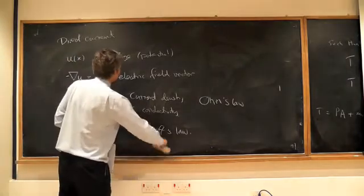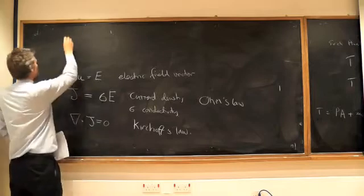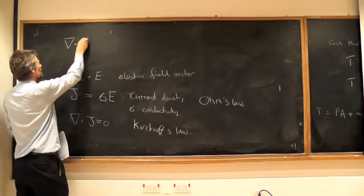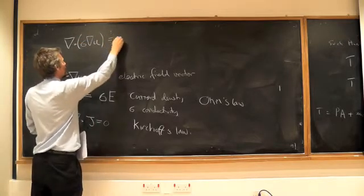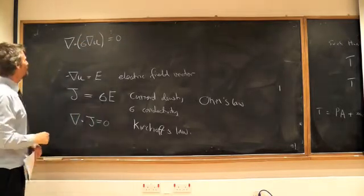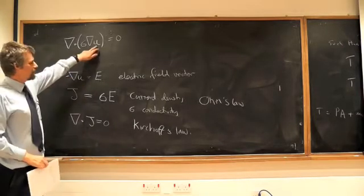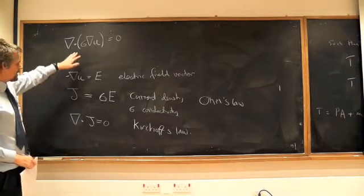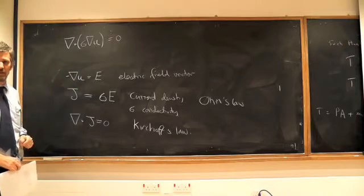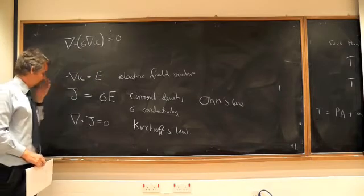And then we put this all together, we've got divergence of sigma grad u is equal to zero. Now you see why I didn't really care about the minus sign. And that's an equation for u, which is the scalar that we're looking for. And so this is Ohm's Kirchhoff's law in electric circuit terms. It's a continual version of Ohm's Kirchhoff's law. It says there's no sources in the interior.